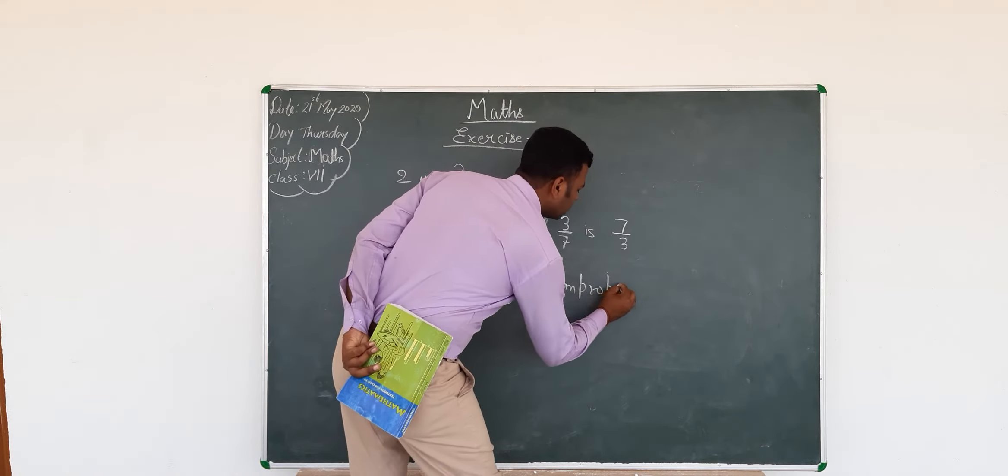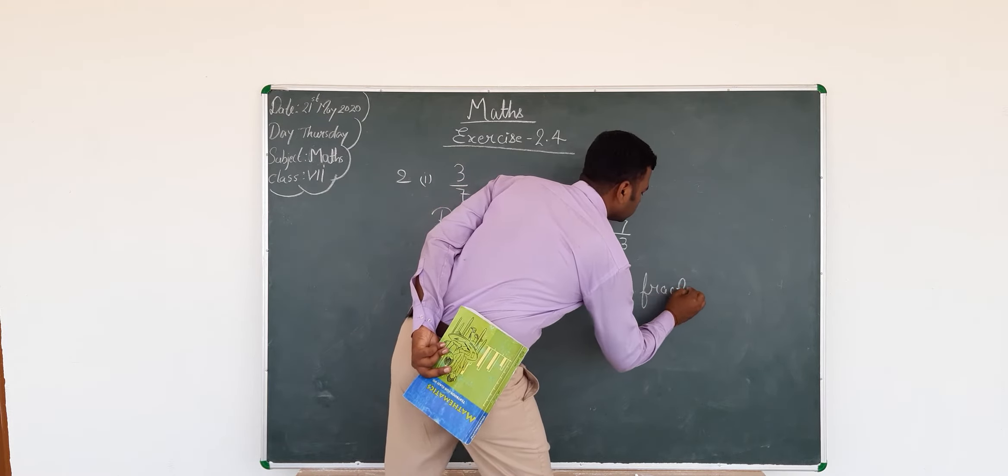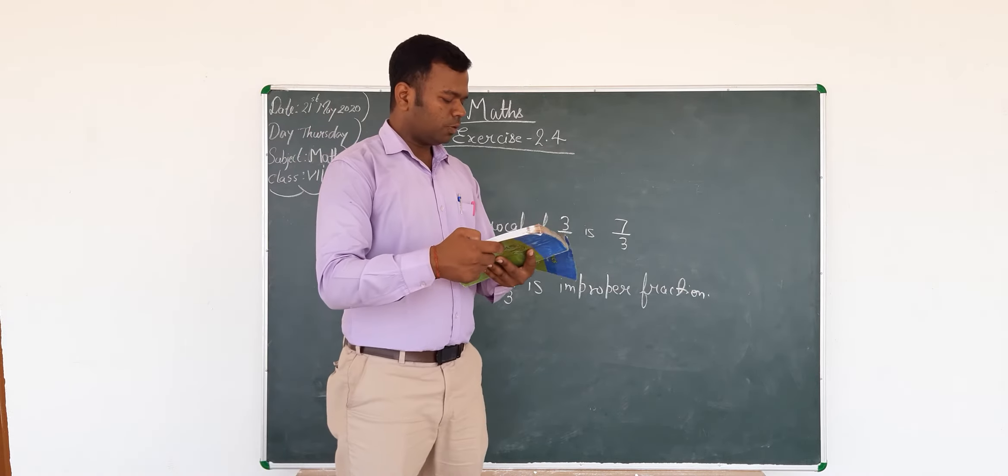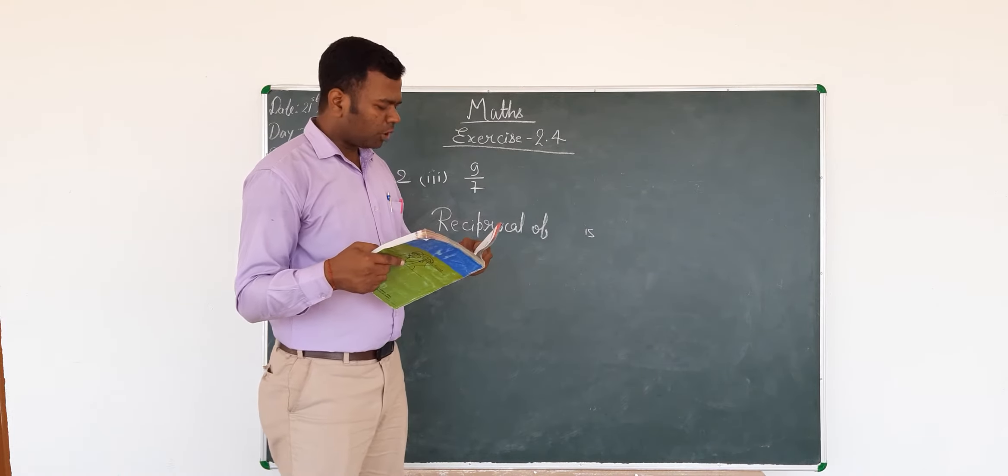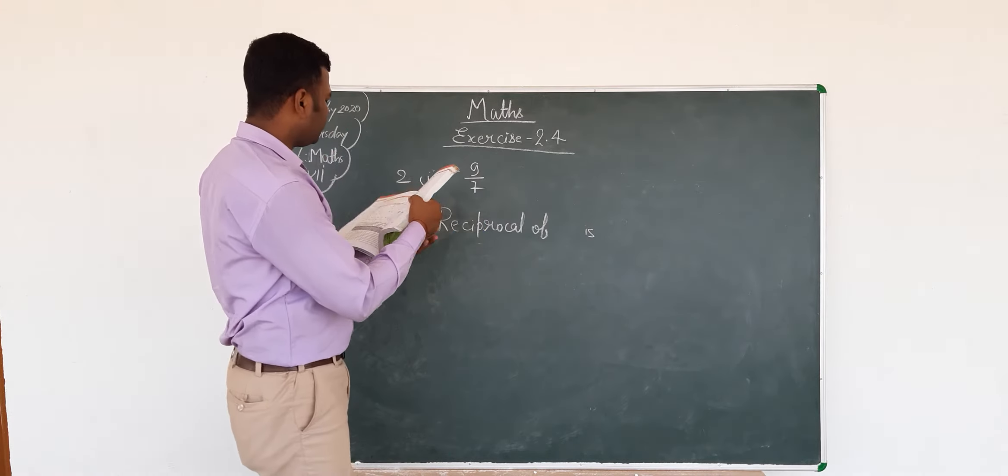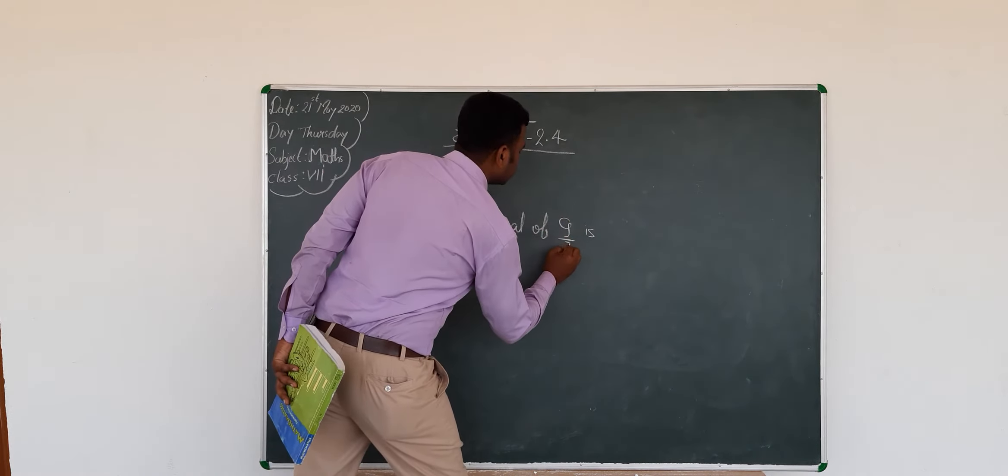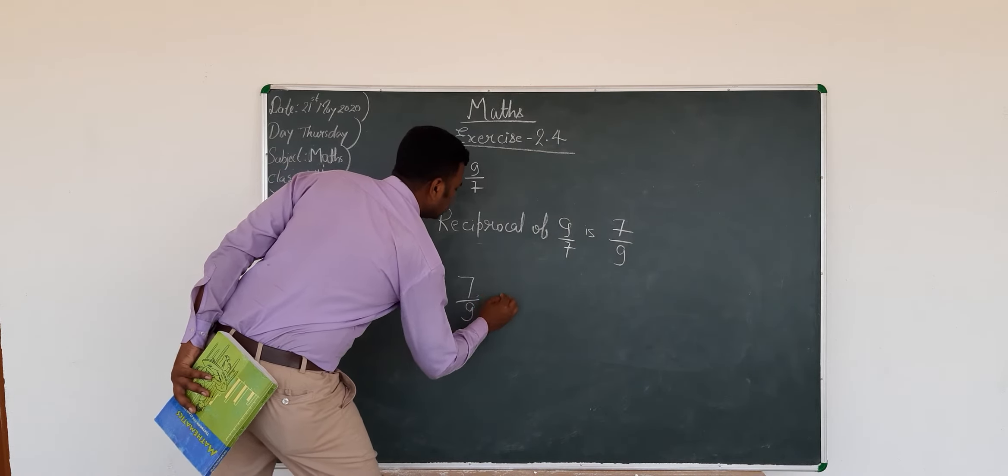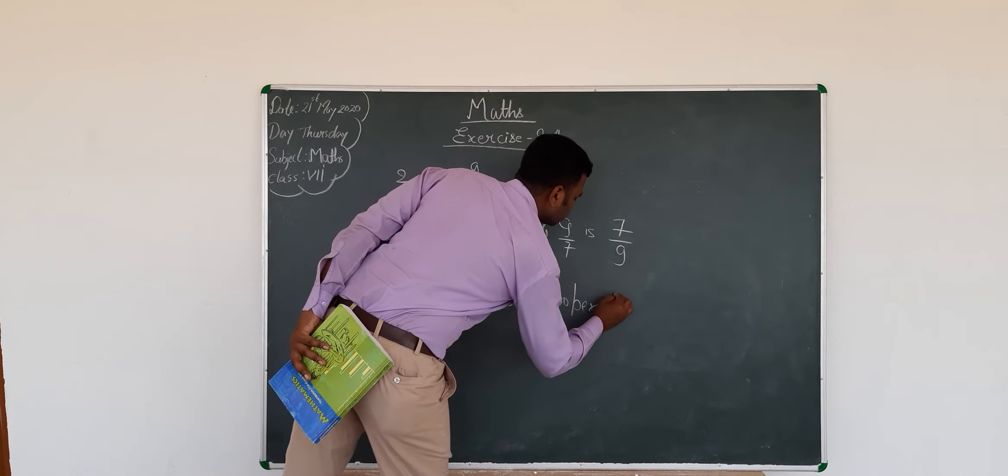I have already taught you about proper fractions and improper fractions. Like this, you will do other problems. The next problem is 9/7. The reciprocal of 9/7 is 7/9, and we all know that 7/9 is a proper fraction.